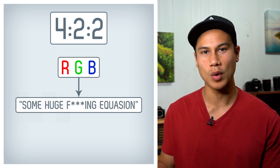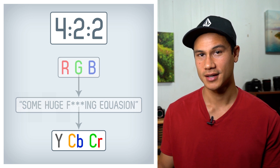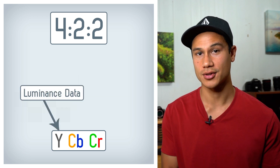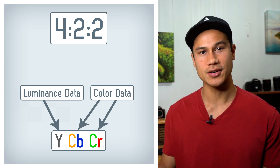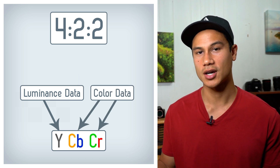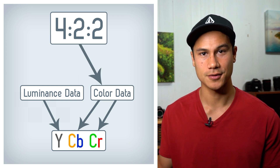Now let's take a look at the 422 and what that means. This is your chroma subsampling. In this process, those RGB channels are converted over to Y, CB, and CR channels. Y ends up being all the brightness, or the luminance, data. But the CB and CR channels are where the chrominance data is, or the color data. And that's really what the 422 applies to.